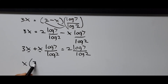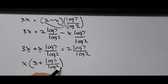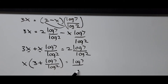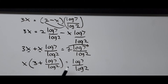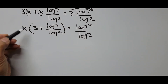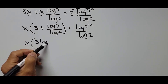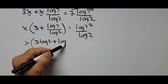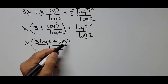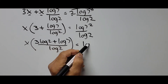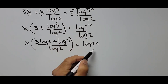Now we factor out x. Bringing the x·log(7)/log(2) term to the left side: x times 3 plus log(7)/log(2) equals log(7)/log(2). Simplifying further: x multiplied by 3·log(2) plus log(7), all divided by log(2), equals log(7) squared — that is log(49) — divided by log(2).